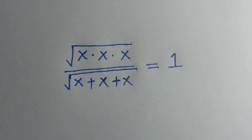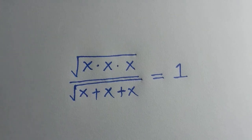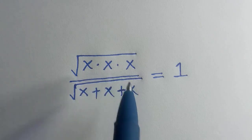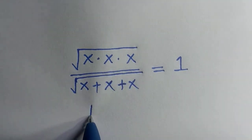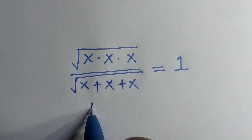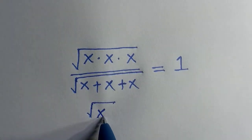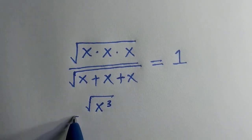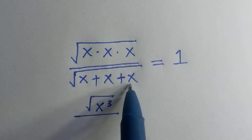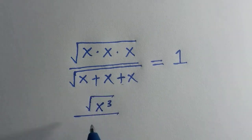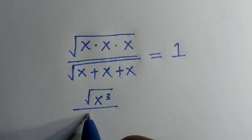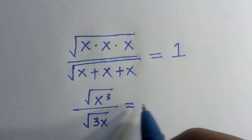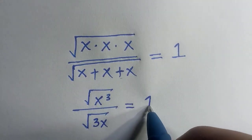We want to find the value of x that satisfies this problem. If we multiply x and x together, we are going to have the square root of x to the power of 3, divided by — and when we add these together, we have 3x. Then everything equals 1.